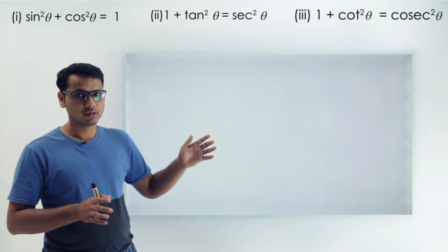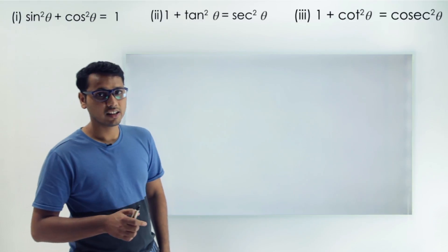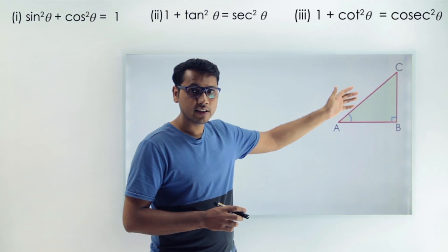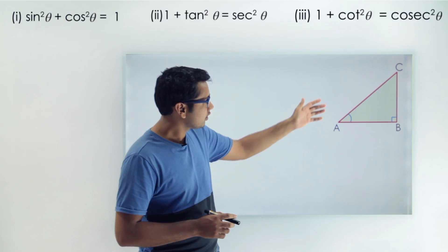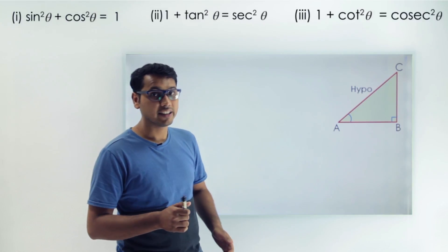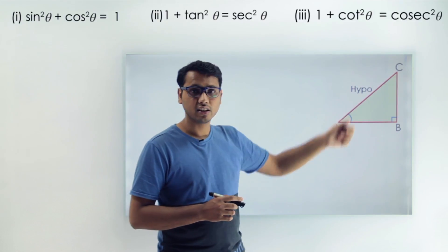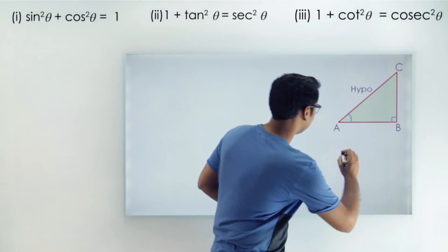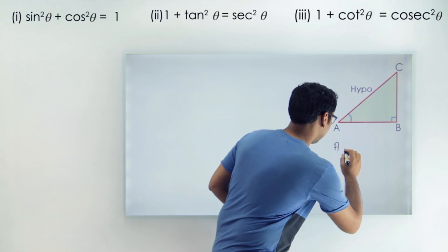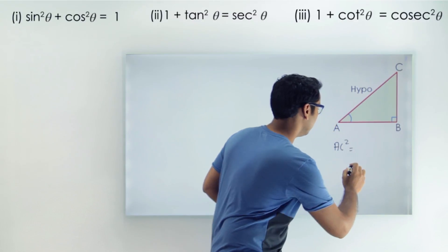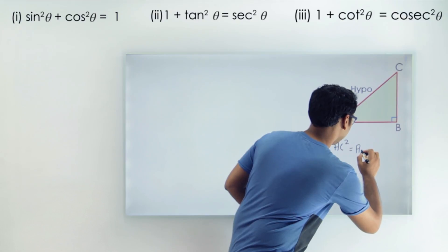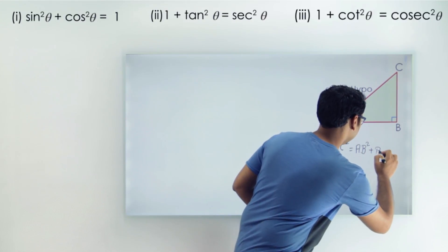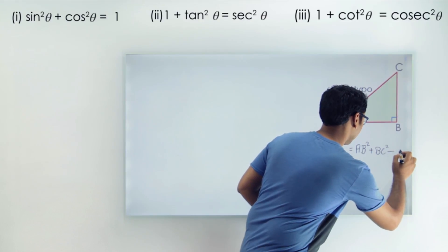To understand these identities we need to apply the Pythagorean theorem, so we need a right-angle triangle first. Consider right-angle triangle ABC, where AC is the hypotenuse since it is opposite to the right angle at B. We can apply the Pythagorean theorem in this right-angle triangle and write: AC square equals to AB square plus BC square. Let's call this equation 0.